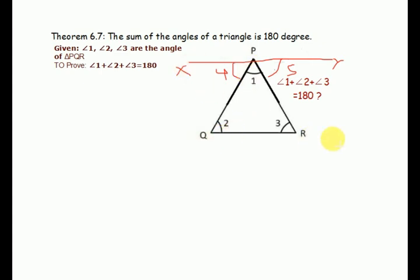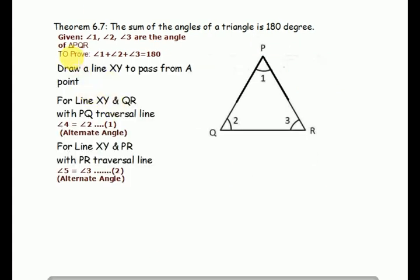Given: XY is parallel to QR. Angles 1, 2, and 3 are the angles of triangle PQR. To prove: angle 1 plus angle 2 plus angle 3 equals 180 degrees. Draw a line XY to pass from P.